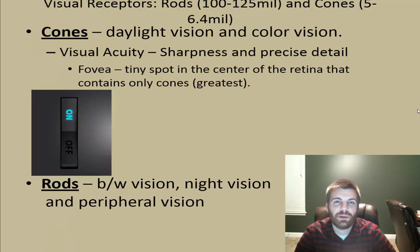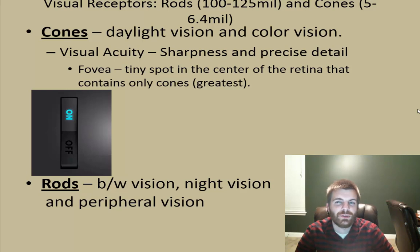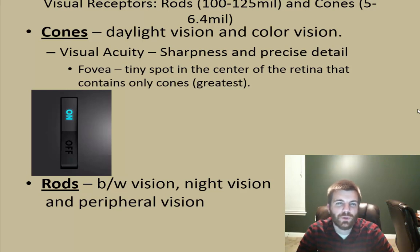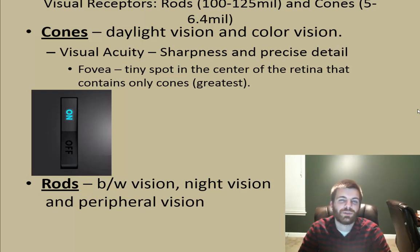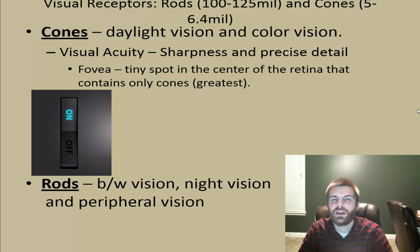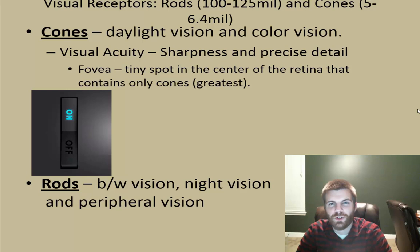Your eye is home to visual receptors called rods and cones. Rods greatly outnumber cones — nearly 125 million to about 5 million. Cones are mostly useful for daylight vision and color vision. One spot that has nothing but cones is the fovea, a tiny spot in the center of the retina that gives you the greatest sense of sharpness and precise detail, called visual acuity. Rods deal more with black and white vision, night vision, and peripheral vision — primarily lining the sides of your eye.